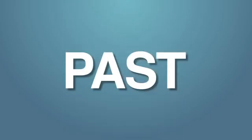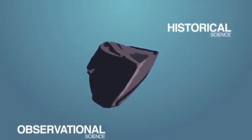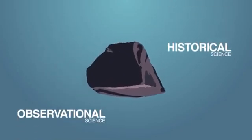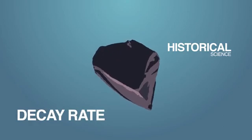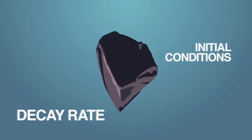Historical science deals with the things in the past, and therefore it cannot be repeated and tested. Dating methods require both types of science, because in order to get accurate rock dates, one would have to accurately know both the decay rate and the initial conditions of the rock sample, right?